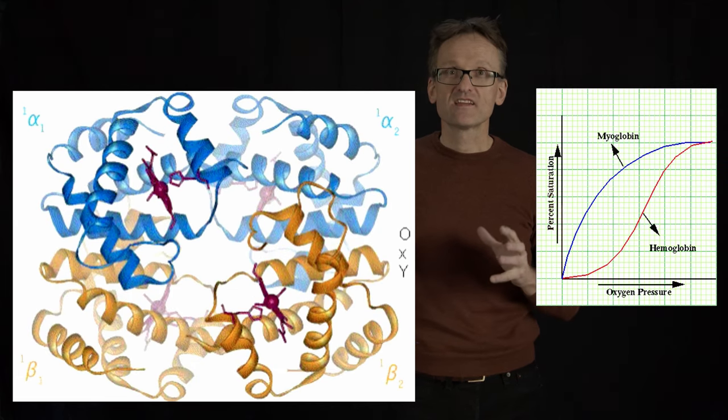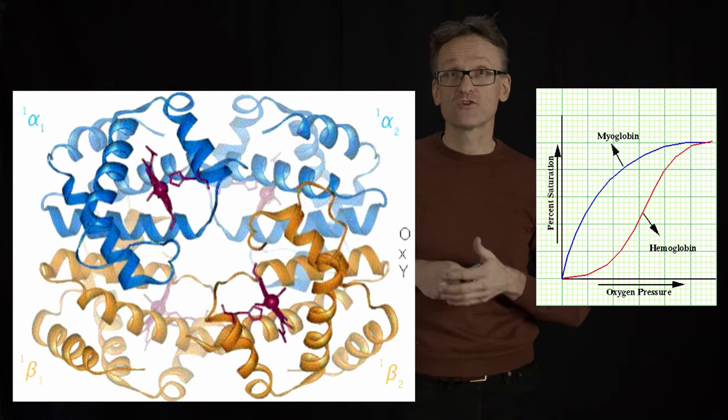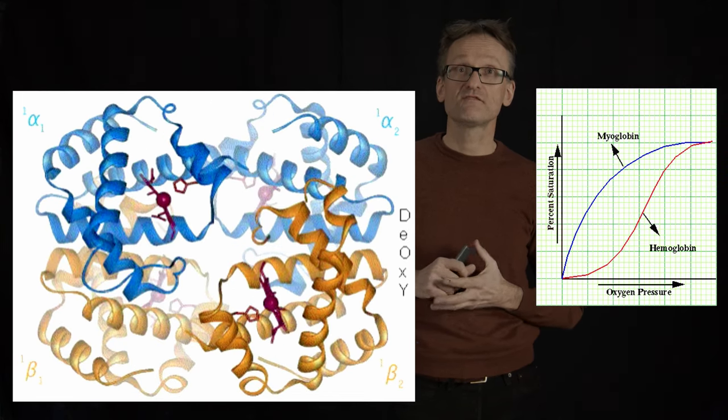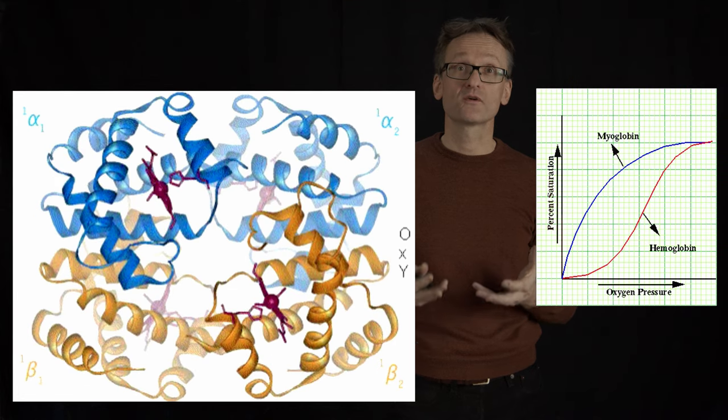This was first identified by Monod, Wyman, and Changeux at the Pasteur Institute in the 1960s or 70s, and it's a fundamental concept called allosteric modulation that occurs throughout nature.